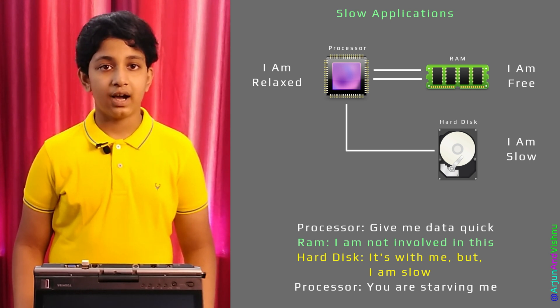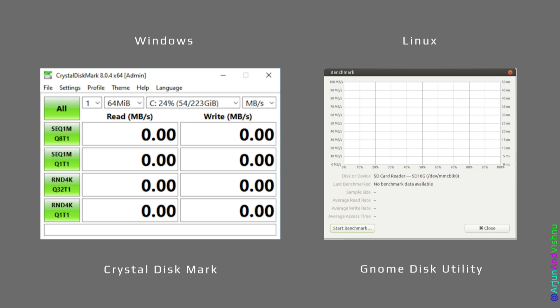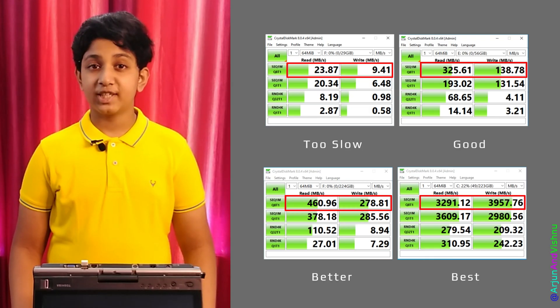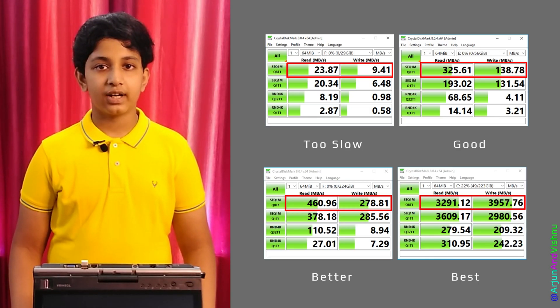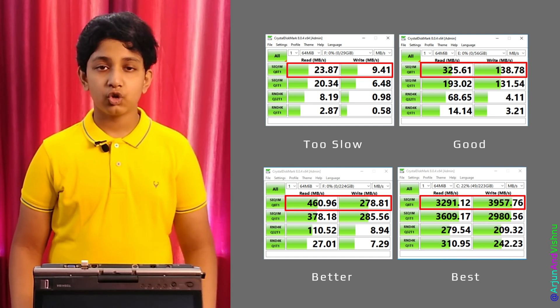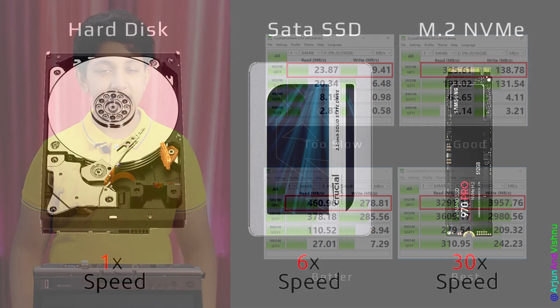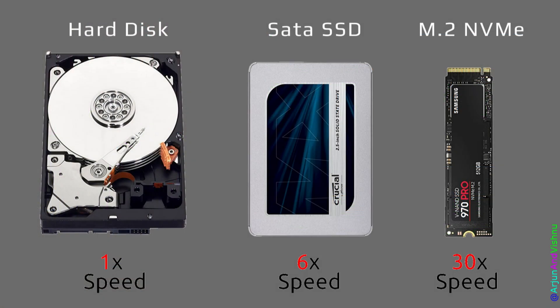To confirm that the hard disk is the reason for the slowdown, you can use a program called Crystal Disk Mark for Windows or Gnome Disks Utility for Linux to benchmark the hard disk. If the speed is less than 100 Mbps, then you can consider it slow for modern applications and it must be replaced. Solid state devices like SSDs and M.2 drives are much faster than spinning hard disks. SSDs have read speeds of up to 500 Mbps, whereas M.2 storage devices have read speeds of up to 3000 Mbps.